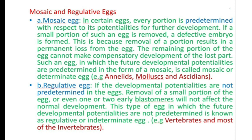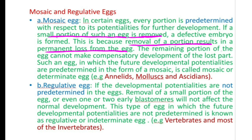Next are the mosaic and regulative eggs. In mosaic eggs, every portion is predetermined with respect to its potentialities for further development. If a small portion of the egg is removed, a defective embryo is formed, because the removal results in a permanent loss from the egg and the remaining portion cannot compensate. Such an egg in which future developmental potentialities are predetermined in the form of a mosaic is called a mosaic or determinate egg. Examples: eggs of annelids, mollusks and ascidians.